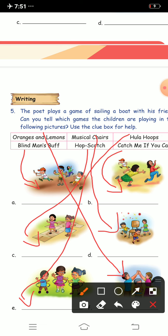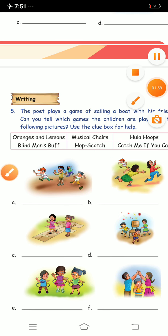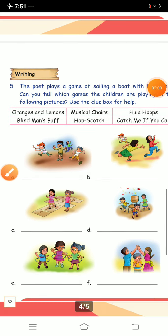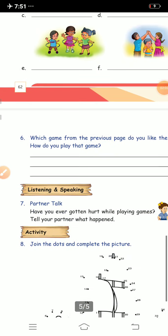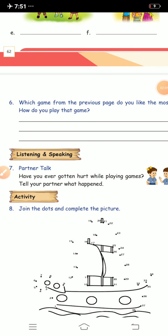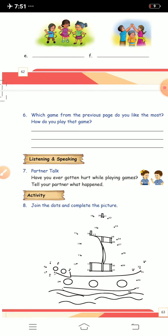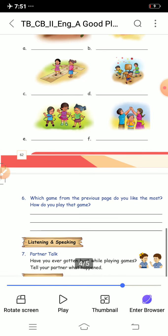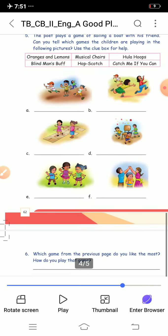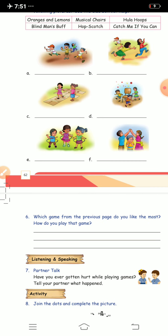Children, you have to write this in your textbook. Now, question six is: which game from the previous page do you like the most and how do you play that game? Out of these games, you have to write which game you like the most and how you play it.